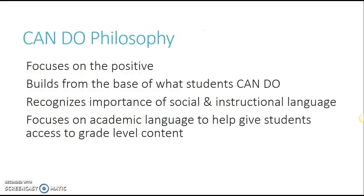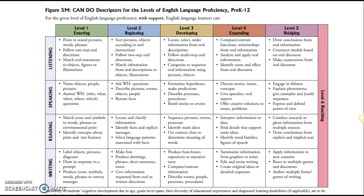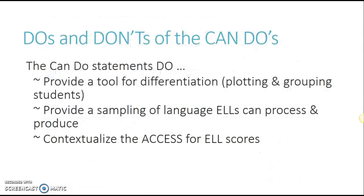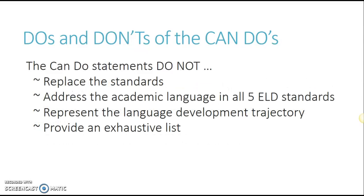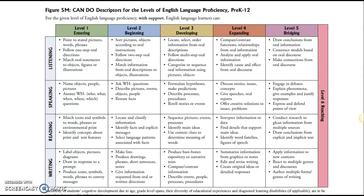The can-do philosophy looks at what students are able to do, not what they can't do, and builds from that. We use what we call the can-do descriptors, which look at the different levels for the different language domains — listening, speaking, reading, writing — and at each level give examples of ways that students can demonstrate learning. It provides a tool for differentiating and gives a sample of things they're able to do, but it's not going to replace the standards, it's not an exhaustive list, and it doesn't represent a fixed language development trajectory — a student may jump from a level one all the way to a level three, as they don't have to go exactly one step at a time.